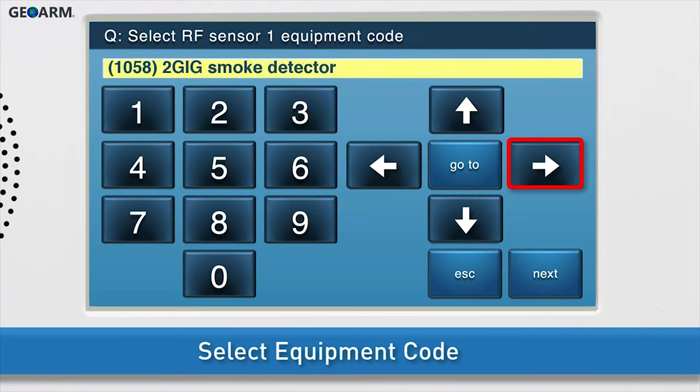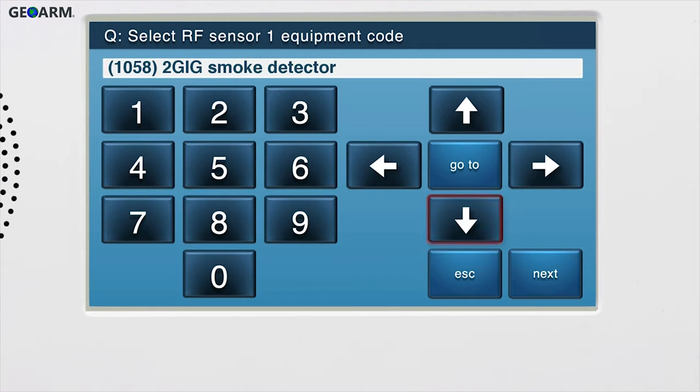You can also type the four-digit code, which is 1, 0, 5, 8, to select this option. Press the down arrow to go to the next sub-question.